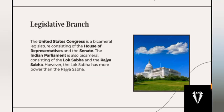Next is the legislative branch. The United States Congress is a bicameral legislature consisting of the House of Representatives and the Senate. The Indian Parliament is also bicameral, consisting of the Lok Sabha and the Rajya Sabha. The Lok Sabha holds more power because it passes the money bill.